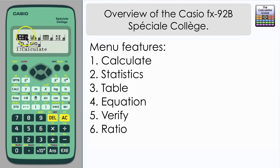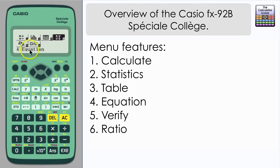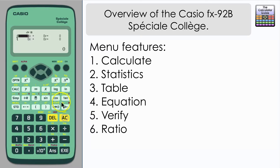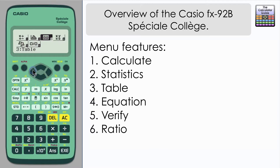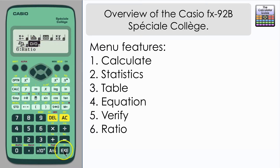If we have a look at the menu first, we can see that we've got the calculate menu, statistics, and table mode. In the equation menu we just have one function here for solving simultaneous equations — that is linear simultaneous equations. And there's two more modes available as well: the verify mode, which is actually absent from the ClassWiz, and the ratio mode, which is a relatively new mode.